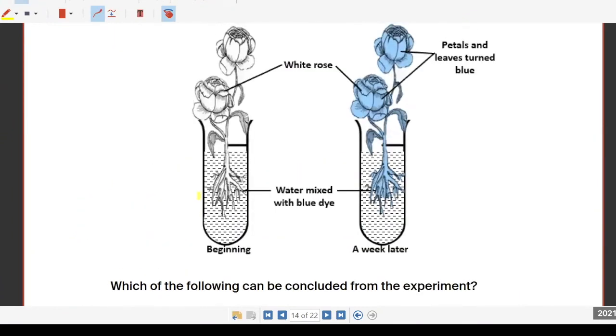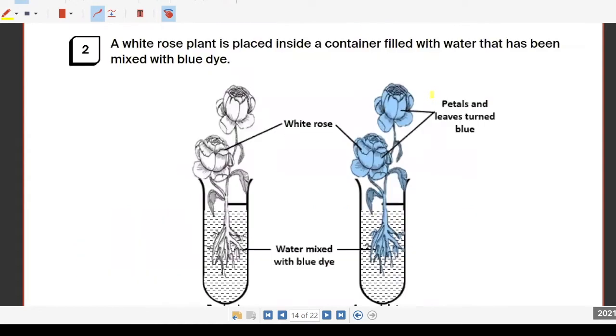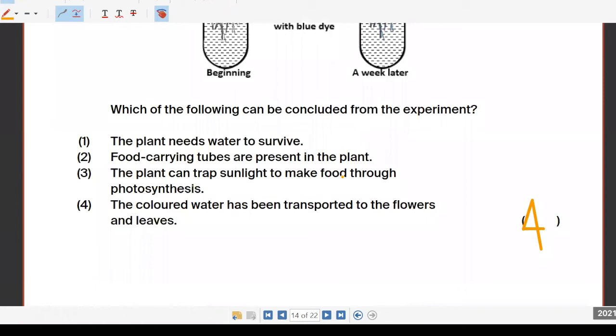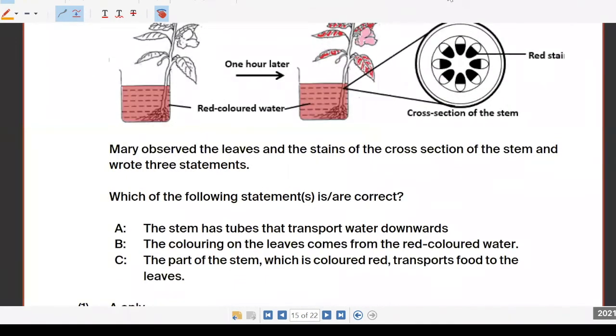Question two: one week later the leaves and the petals turn blue. Everybody chose four, colored water has been transported to the flowers and leaves. You are right, fantastic. Answer is four. Next question three, similar picture but different question. Answer is two. Both of you got the same answer for question three.